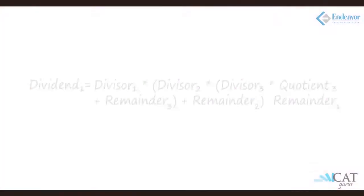Let us look at how it is put into a formula. Let us work backwards. The last division first. The last division is divisor 3 into the quotient 3 plus the remainder 3. Now this becomes the innermost portion.